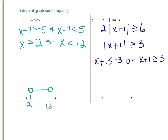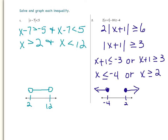Once you write your disjunction, you will just solve each inequality for x. On the left side, I will subtract 1 from both sides of the inequality, and I will have x is less than or equal to negative 4. For the other one, I will also subtract 1 from both sides, so I will have x is greater than or equal to 2. Because this is a disjunction, x can be less than or equal to negative 4, or it can be greater than or equal to positive 2. x cannot be any number between negative 4 and positive 2.